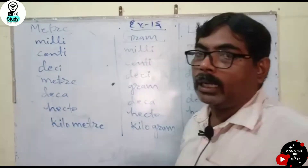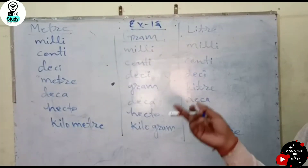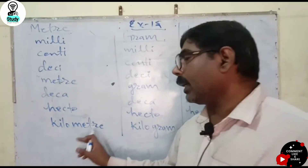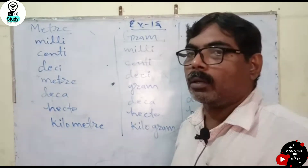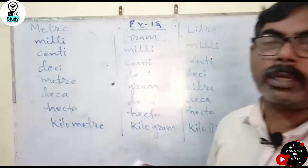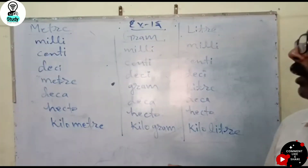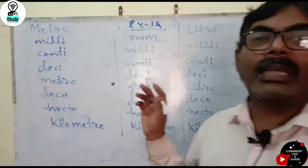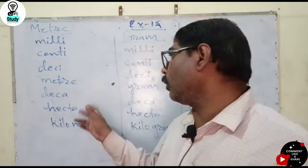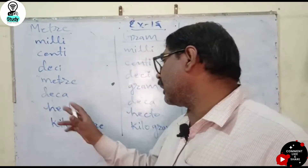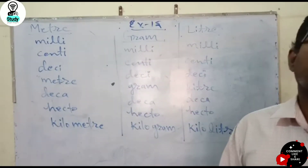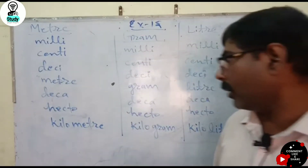If you change a smaller unit into a greater unit, then you have to divide. And if you change the greatest unit to a smallest unit, then you have to multiply.